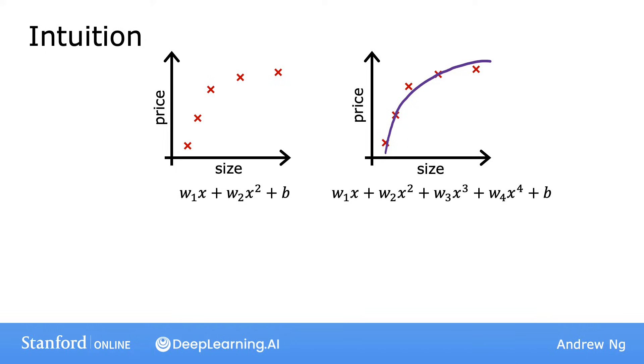Recall this example from the previous video, in which we saw that if you fit a quadratic function to this data, it gives a pretty good fit. But if you fit a very high order polynomial, you end up with a curve that overfits the data.